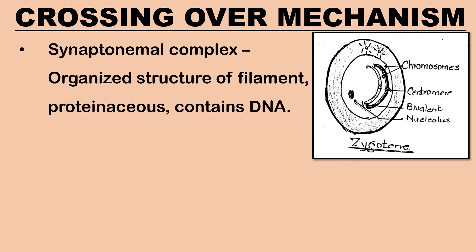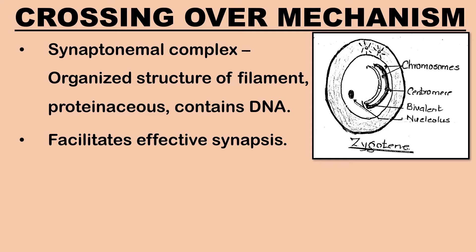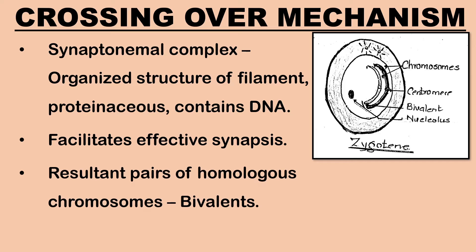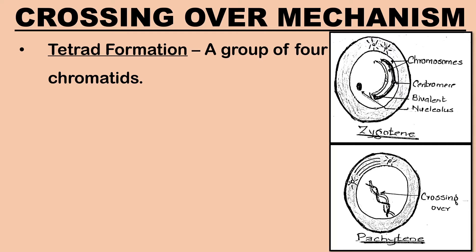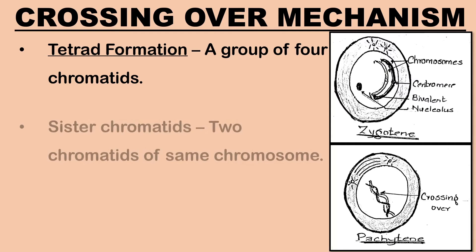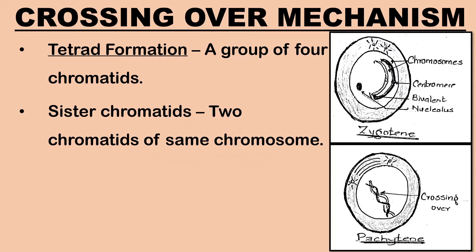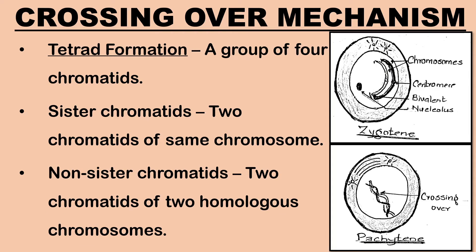The synaptonemal complex is an organized structure of filaments, proteinaceous in nature, and contains DNA. It facilitates effective synapsis. The resultant pairs of homologous chromosomes form a group of four chromatids, termed a tetrad. Sister chromatids are the two chromatids of the same chromosome, while non-sister chromatids are the two chromatids of two homologous chromosomes.